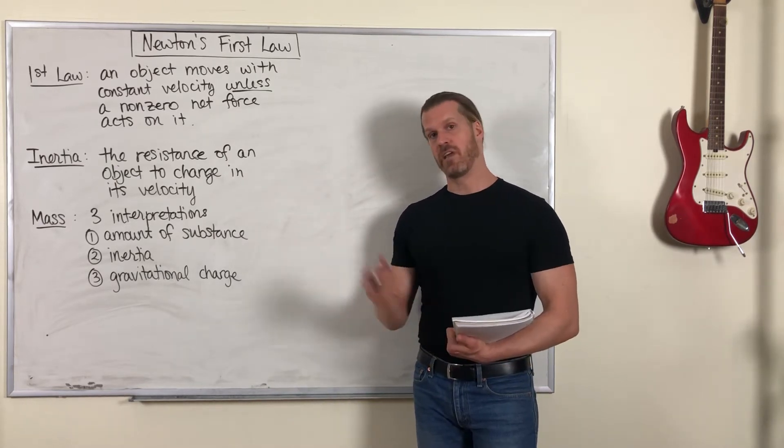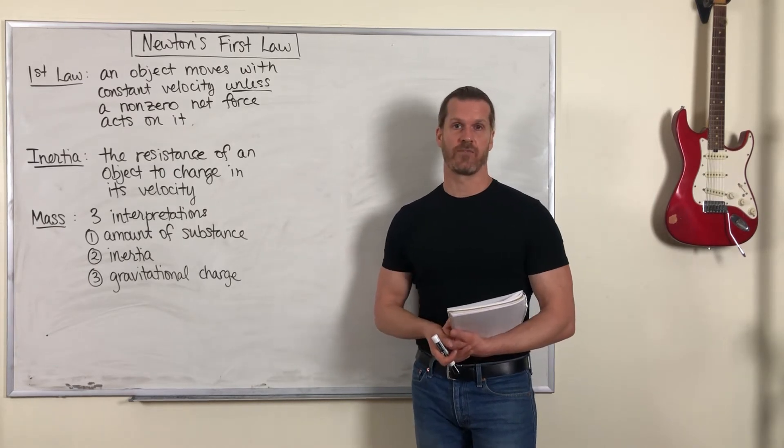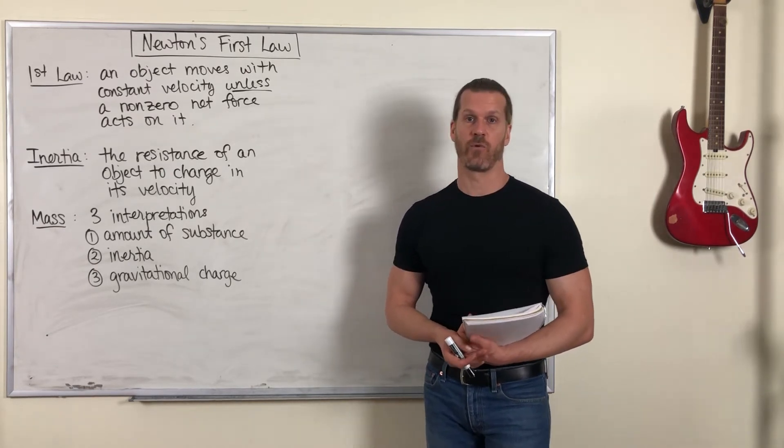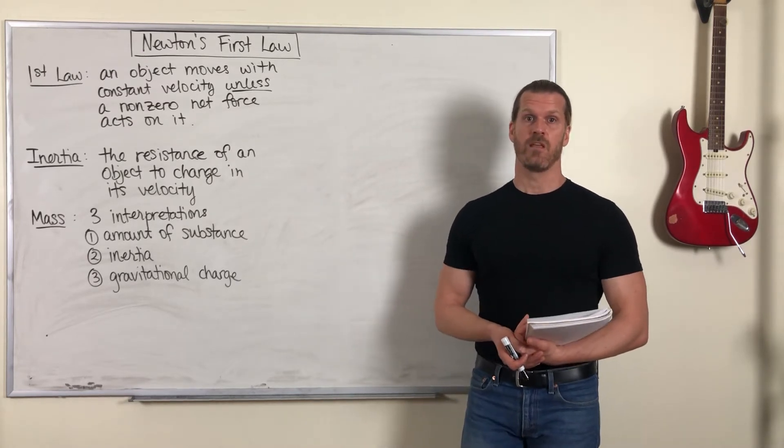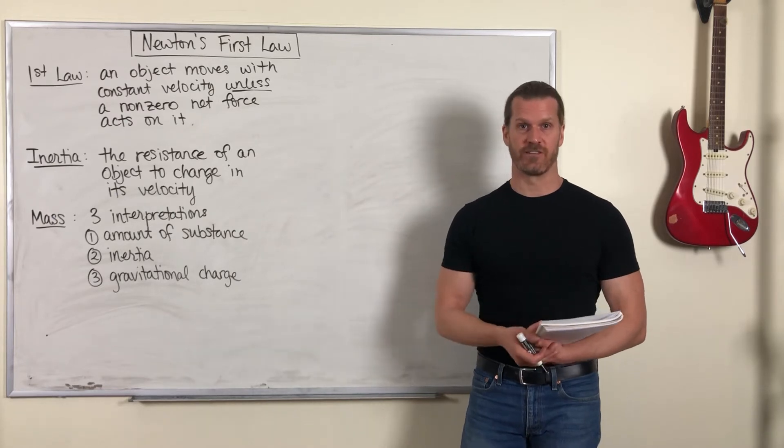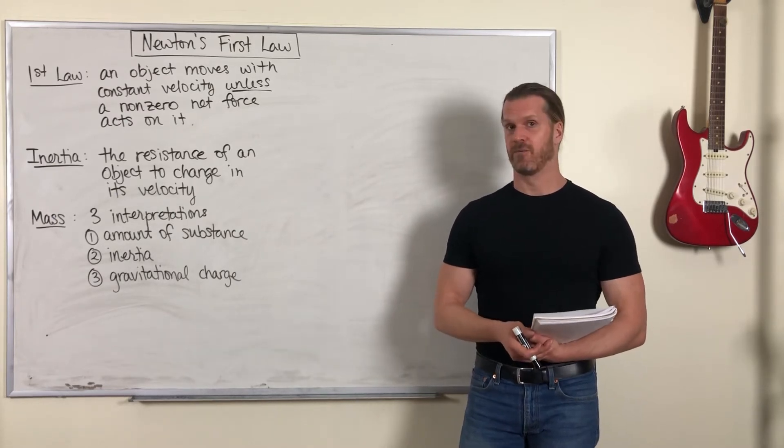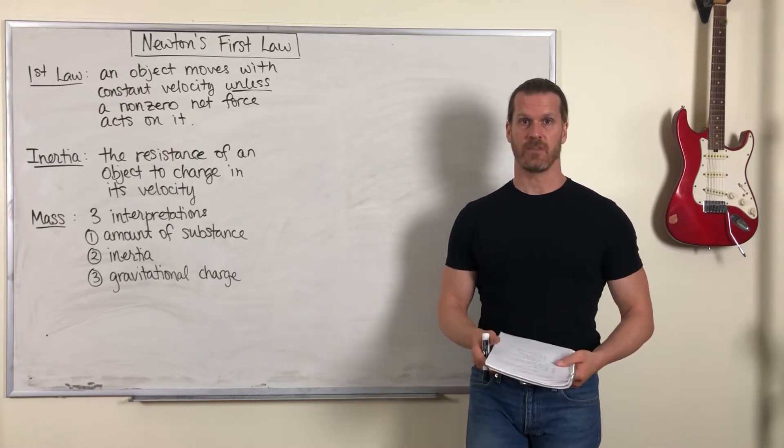But Newton came along and said, well, the reason why the ball slows down and stops is because there's a force pushing on it. There's a friction force. If you could eliminate all forces, if you could eliminate all friction, then that ball wouldn't ever stop rolling. It would keep moving at the same speed. It wouldn't slow down.